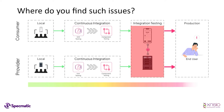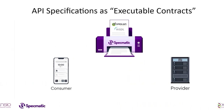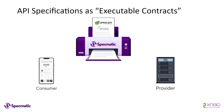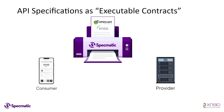Is there a way we can identify such compatibility issues early on our local environment or on the CI by leveraging API specifications? That's exactly what Specmatic enables you to do.